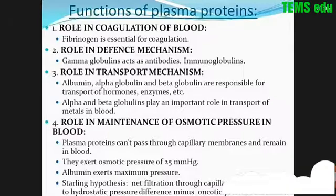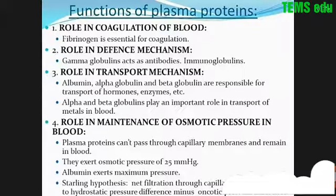Role in viscosity: plasma proteins provide viscosity to the blood, which is important to maintain blood pressure. Role in acid-base balance: albumin plays an important role in maintaining acid-base balance in blood due to its buffering action. Role in suspension stability of RBCs: globulin and fibrinogen accelerate suspension stability in RBCs. These are the functions of plasma proteins.